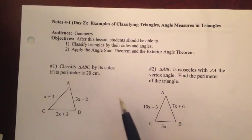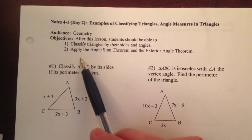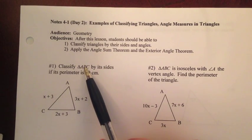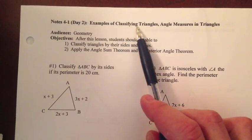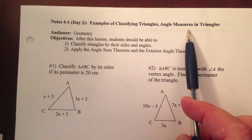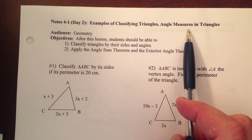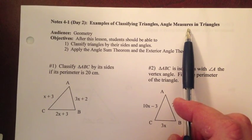Okay, so now we're going to move on to some examples, so we'll move on to the guided notes here. Notes 4-1, Examples of Classifying Triangles, Angle Measures in Triangles. So we'll do a couple examples, and then we'll talk about a few more rules here.